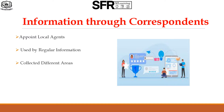Third one is information from correspondence. Under this method, the investigator appoints local agents or correspondents in different places. They collect the information and supply it to the head office. This method is adopted by newspapers and some government departments. For example, wholesale price index numbers are constructed by getting regular information from different correspondents appointed in different areas. This method is more suitable for crop estimations. The merits are coverage of wide area, economy of time and money, and more speed.